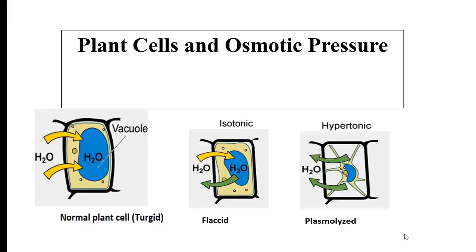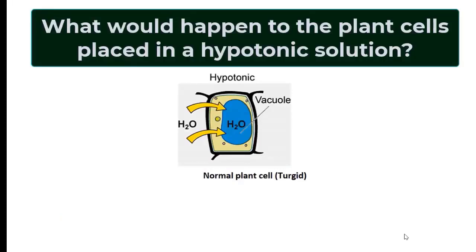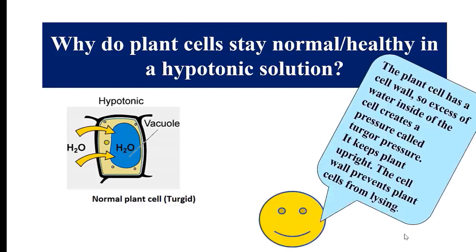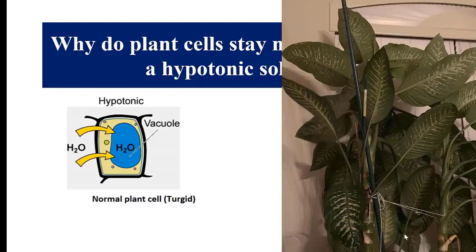Now, osmosis in plant cells. What would happen to plant cells placed in a hypotonic solution? As you see here, water will flow into the cell — just like an animal cell. Why do plant cells stay normal and healthy in a hypotonic solution? Why don't they burst? The plant cell has a cell wall made of cellulose.